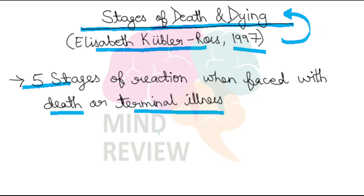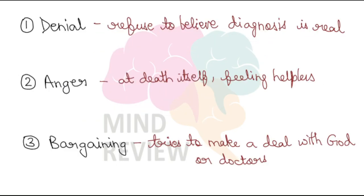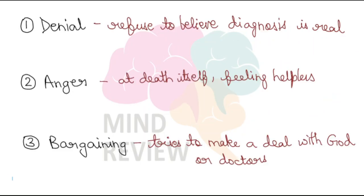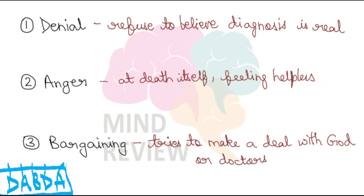How would an individual react to the diagnosis of a terminal illness — say if somebody has been told they have only a certain number of days left? Elizabeth Kübler-Ross said there are five stages of reaction: Denial, Anger, Bargaining, Depression, and finally Acceptance. Remember this order — you can use the acronym DABDA: Denial, Anger, Bargaining, Depression, Acceptance.